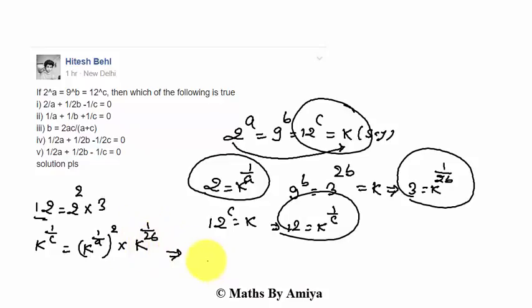So by this we can say K raised to power 1 by C is K raised to power 2 by A times K raised to power 1 by 2B.